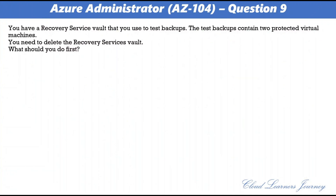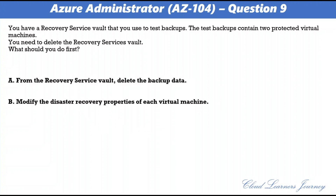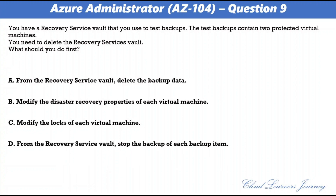Question 9. You have a recovery service vault that you use to test backups. The test backups contain two protected virtual machines. You need to delete the recovery service vault. The correct option is D: from the recovery service vault, stop the backup of each backup item. You cannot delete a recovery service vault if it is registered to a server and holds backup data, because the vault is still configured to receive backup data. Remove vault dependencies first, then delete the vault.